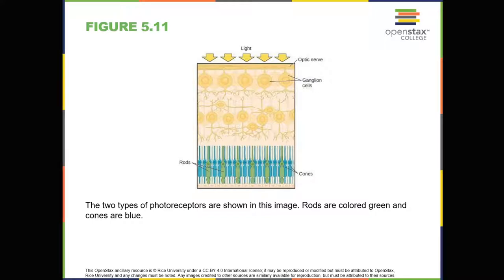Rods are specialized photoreceptors that work well in low light conditions. While they lack the spatial resolution and color function of the cones, they're involved in our vision in dimly lit environments, as well as in our perception of movement on the periphery of our visual field. We've all experienced the different sensitivities of rods and cones when making the transition from a brightly lit environment to a dimly lit environment.